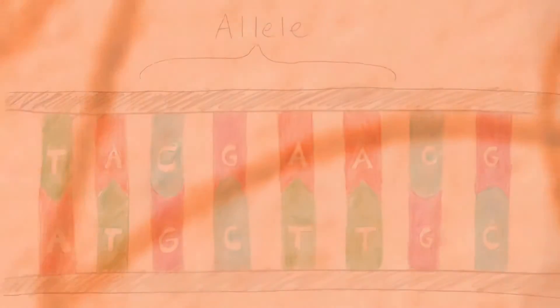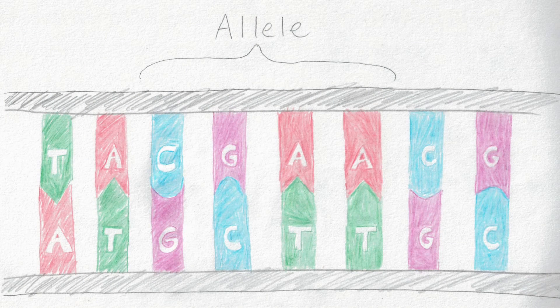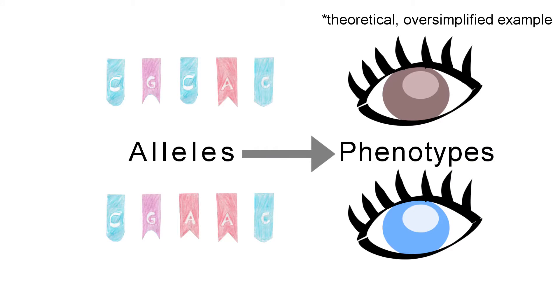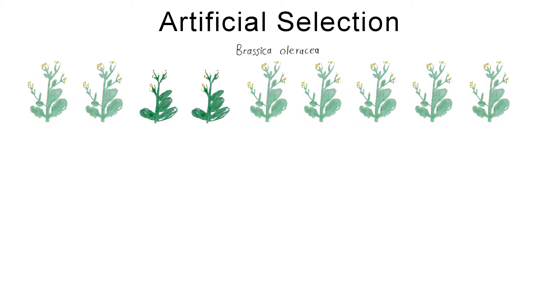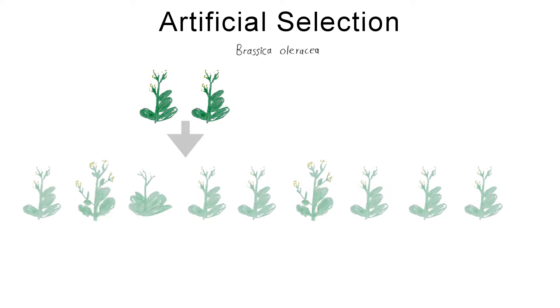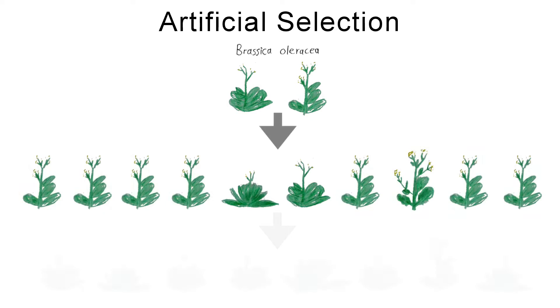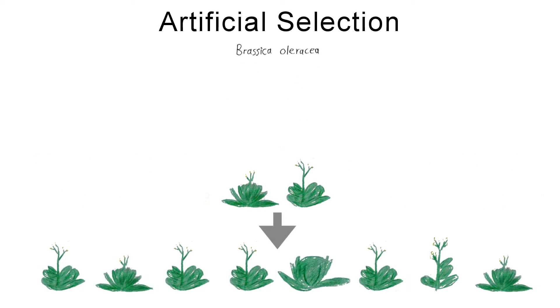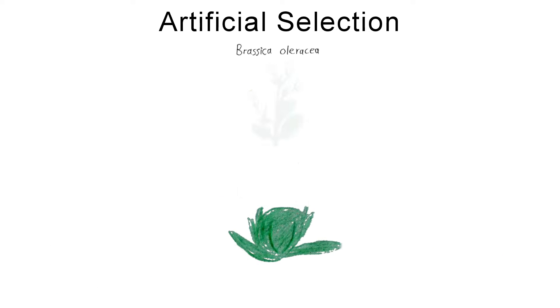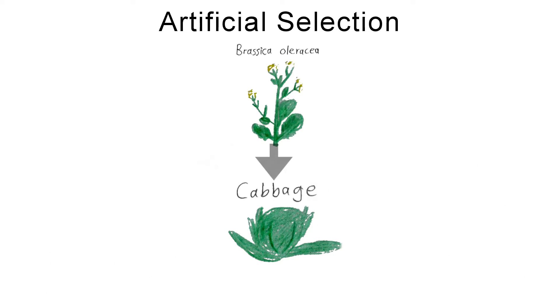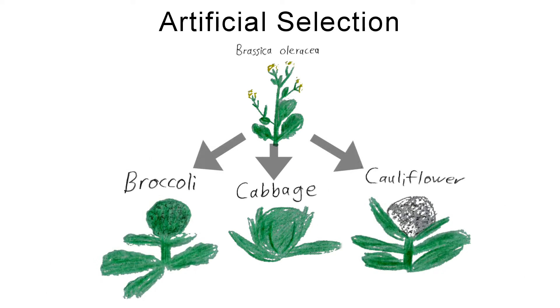Different organisms have different alleles expressed, which are responsible for various phenotypes or physical characteristics. Artificial selection is when humans select variants with preferred alleles and breed them together. For example, humans have modified just one species into cabbage, broccoli, cauliflower, and more.